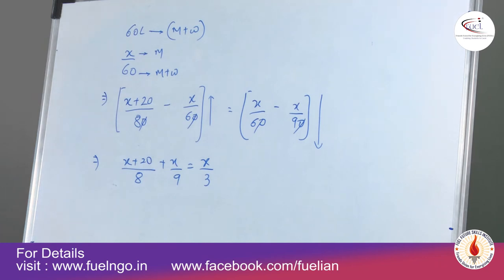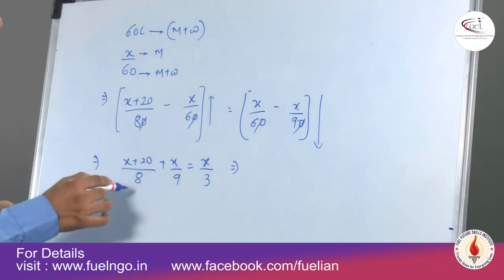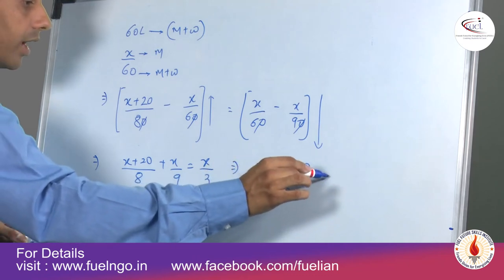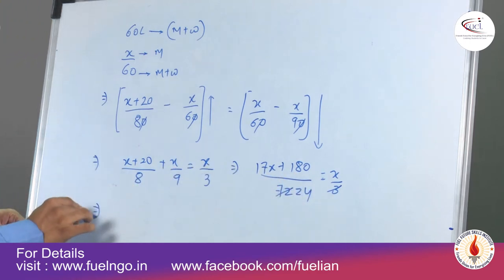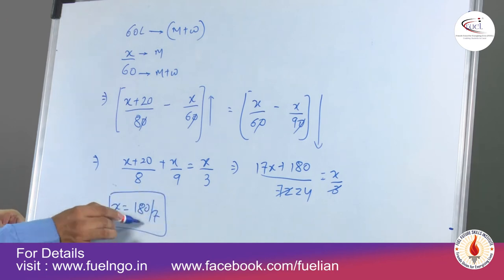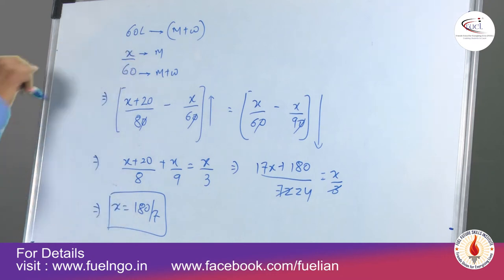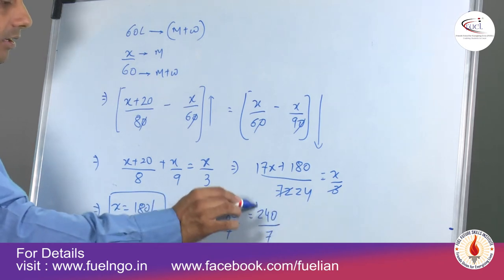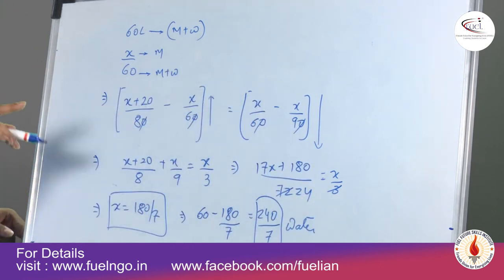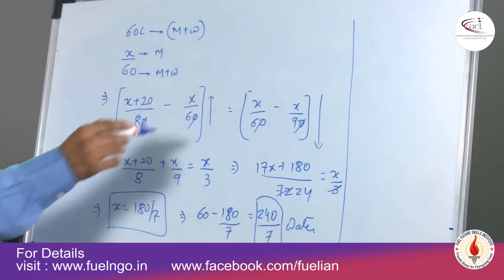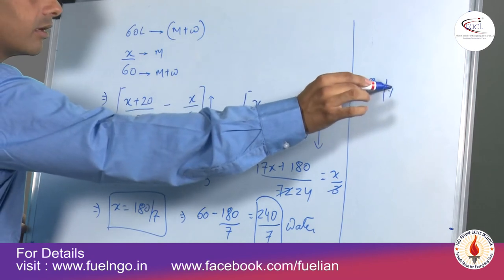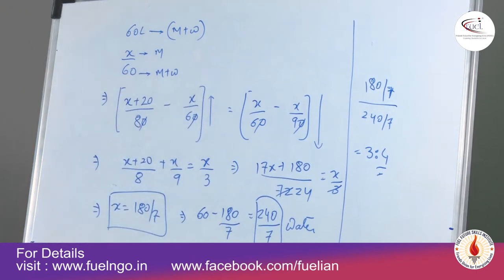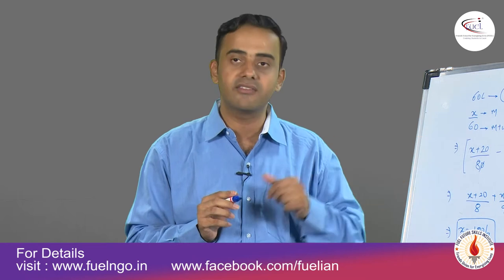So x, which is 180 by 7, is your milk. Out of 60, if 180 by 7 represents milk, then the remaining 240 by 7 represents water. The final ratio — milk to water — is 180/7 to 240/7, which gives us 3 is to 4. So the ratio in which milk and water were initially present in the solution is 3 is to 4.